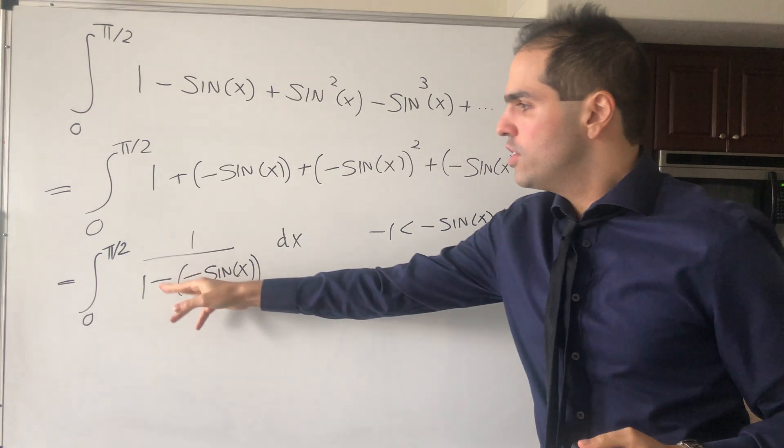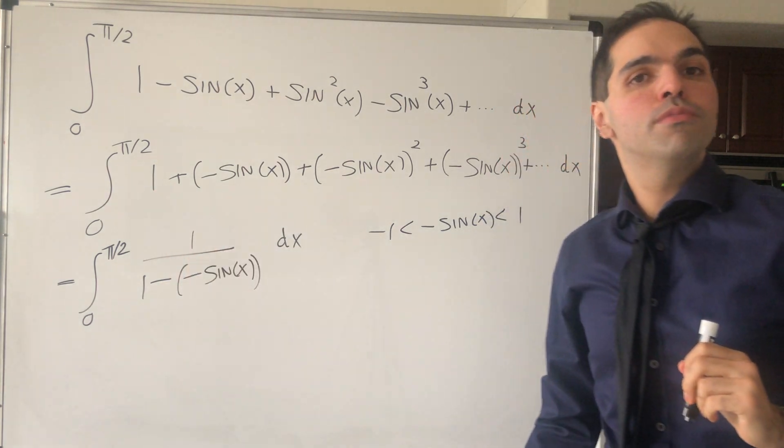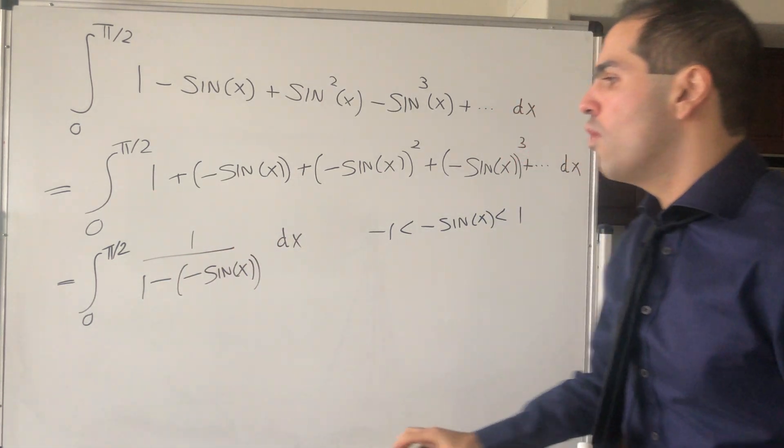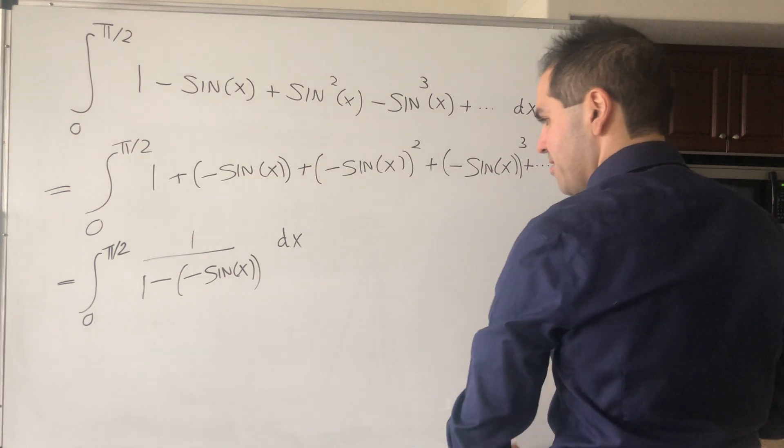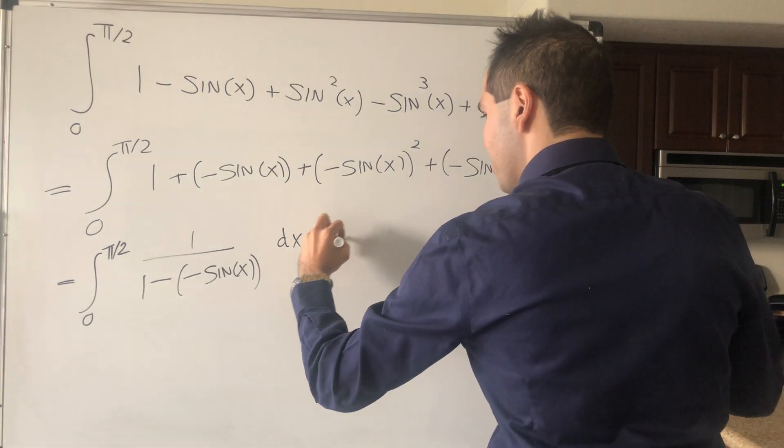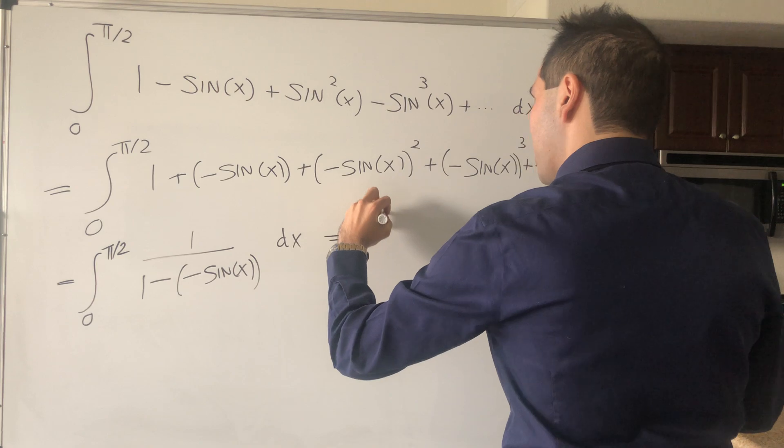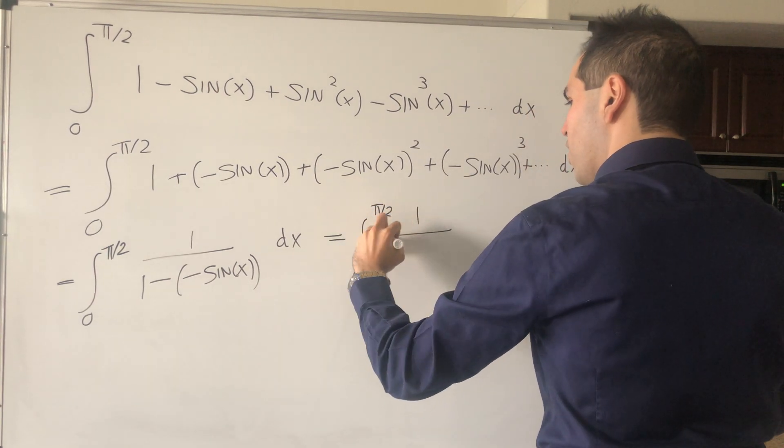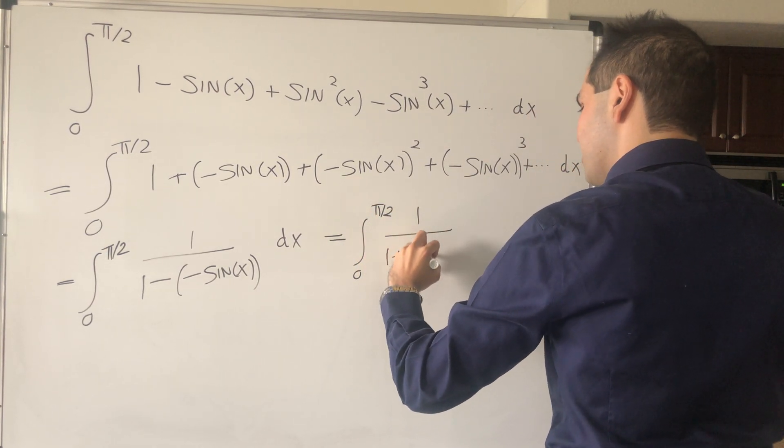And so all we need to do is just evaluate the integral from 0 to pi over 2 of 1 over 1 plus sin of x. So this becomes the integral from 0 to pi over 2 of 1 over 1 plus sin of x, dx.